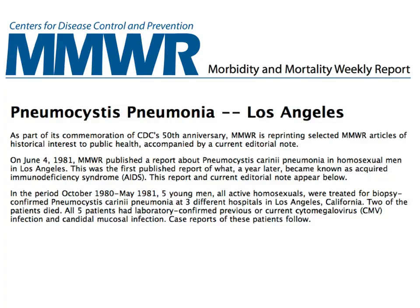This all begins back in 1981 with a report in Morbidity and Mortality Weekly Report, a weekly publication by the CDC summarizing diseases and mortality in the US. It noted that from October 1980 to May 1981, five young men, all active homosexuals, were treated with biopsy-confirmed Pneumocystis carinii pneumonia at three hospitals in Los Angeles. Two of them died. All five had laboratory-confirmed cytomegalovirus infection and candidal mucosal infection. These were unusual opportunistic infections not common for young men, and they occurred in a cluster of five.